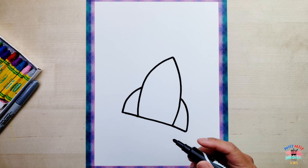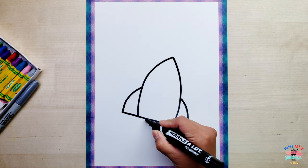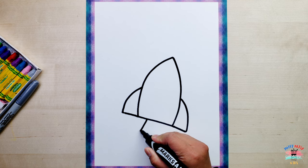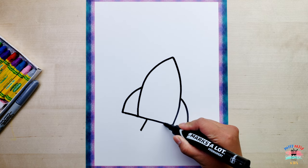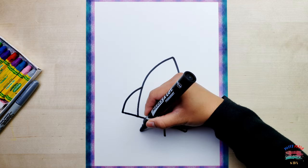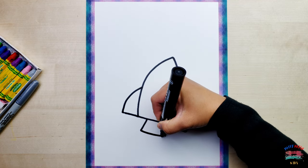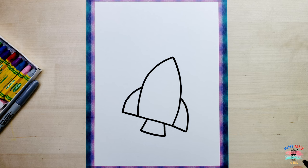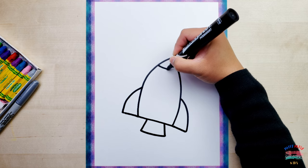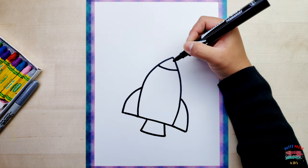and then now let's draw the motor mount down here. A line going down, going down, and close it. Alright, now let's draw a line here like that.